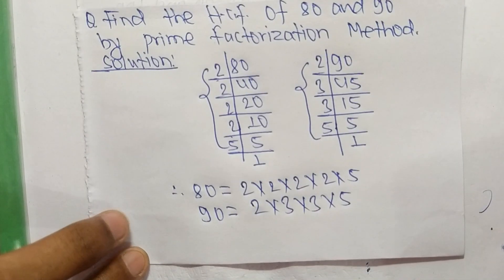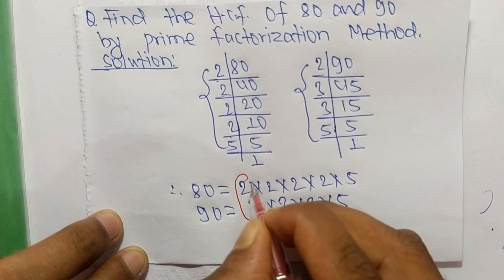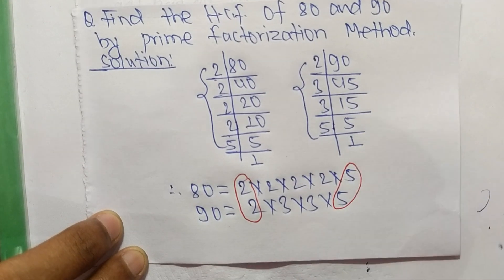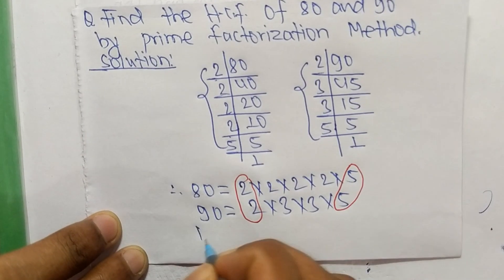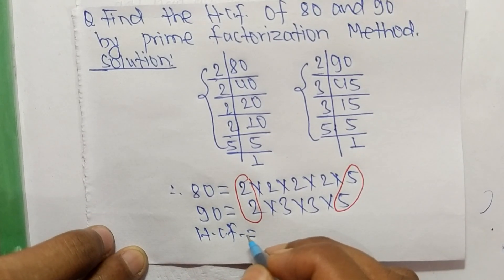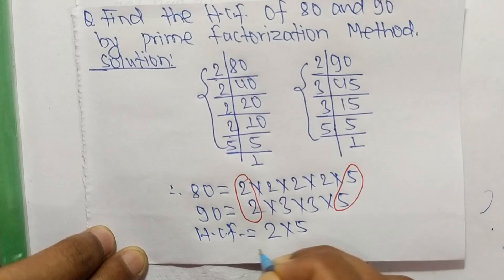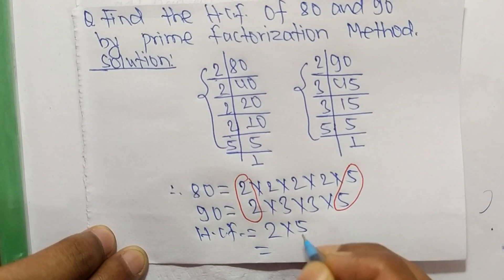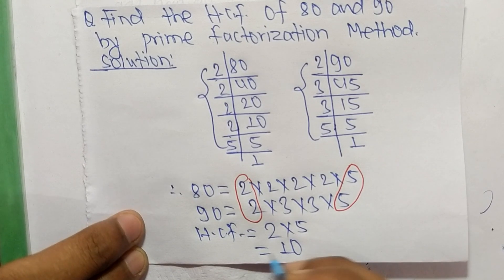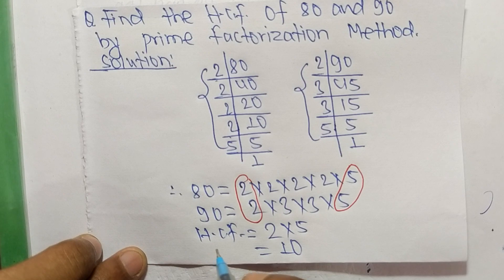Now we select the common factors from these prime factorizations. The common factors are 2 and 5. So the HCF is equal to the product of these common factors: 2 times 5 equals 10. Therefore, 10 is the HCF of 80 and 90.